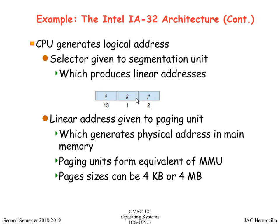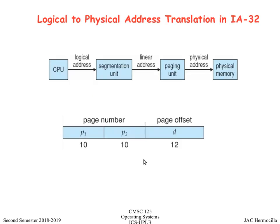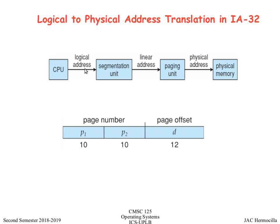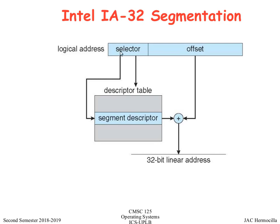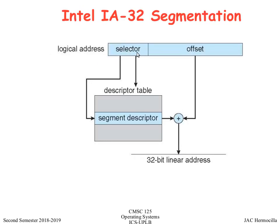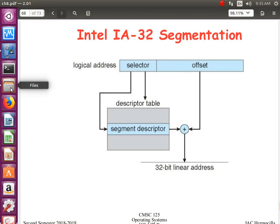The linear address is given to the paging unit. The logical address passes into the segmentation part — it has two parts: the selector and the offset. The selector looks up in the global descriptor table, and it is added to the offset to get the 32-bit linear address.